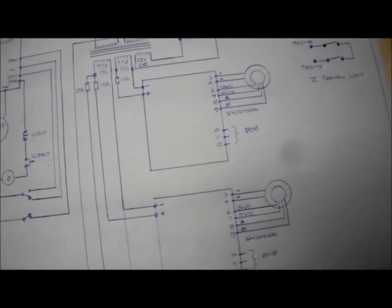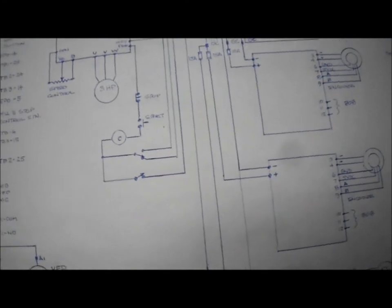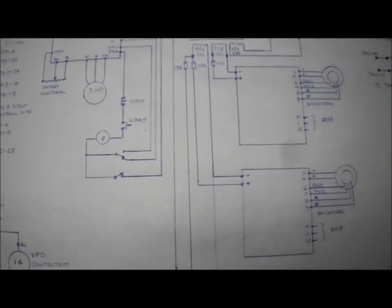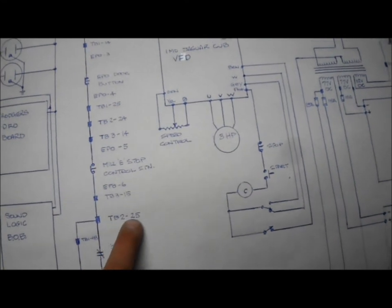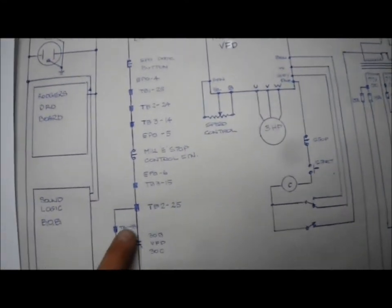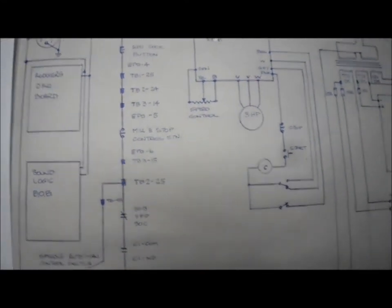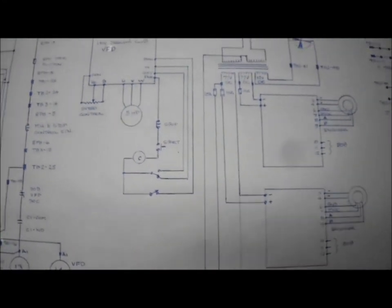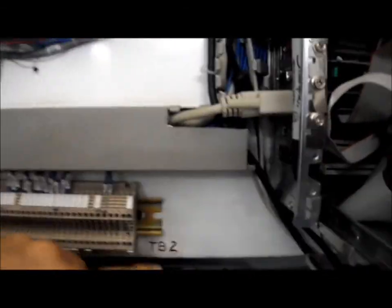What I'm going to do is we'll pause this now. I'll go out into the shop and we'll look at the control panel, how I built it, and you'll start seeing some of these here, terminal block two number 25, and how it worked out just to give you an idea.